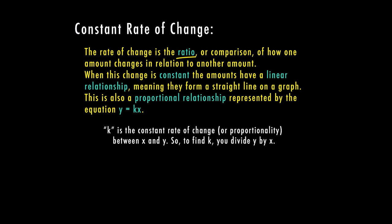When this change is constant, the amounts have a linear relationship and you can see the base word in linear is line. So this means that they form a straight line on a graph. This is also called a proportional relationship, which is represented by the equation y equals kx. So k is our constant rate of change or proportionality between x and y. So x and y are your two amounts that we were talking about as a ratio when we're describing a graph.